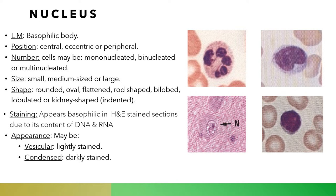As we said before, I cannot say that this is a cell unless I have a nucleus. We have the platelets and the RBCs which do not contain a nucleus. The nucleus appears as a basophilic body. Why? Because it contains DNA and RNA, which are acids, and acids like to be stained with something basic.